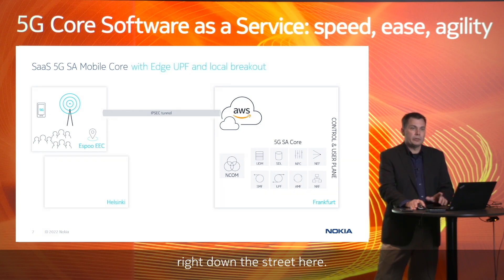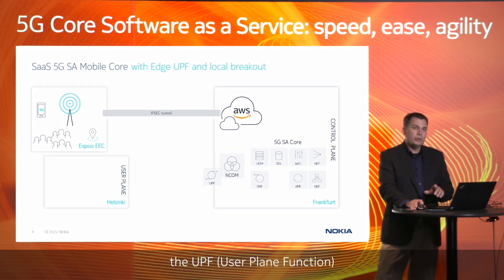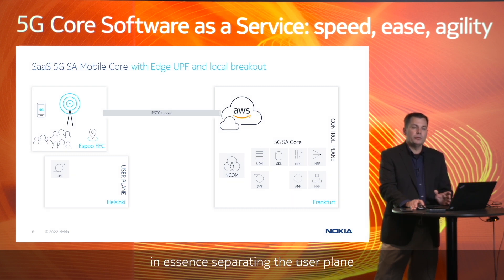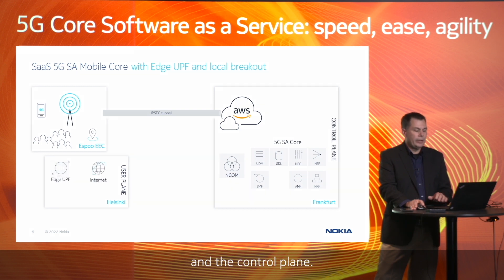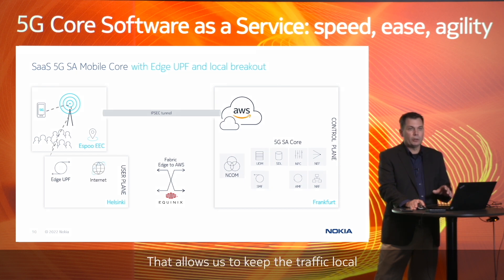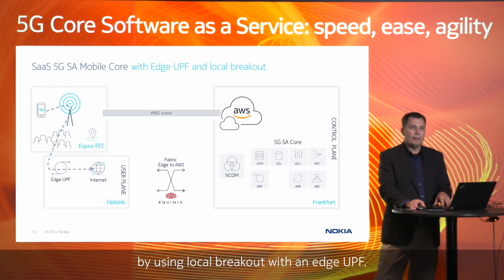I've got a data center right down the street here, and what if we moved the UPF from the AWS location to the Helsinki data center — in essence, separating the user plane and control plane. We then connect that data center back to the core running in AWS through a fabric. That allows us to keep the traffic local by using local breakout with an edge UPF. So let me show you how we do this.